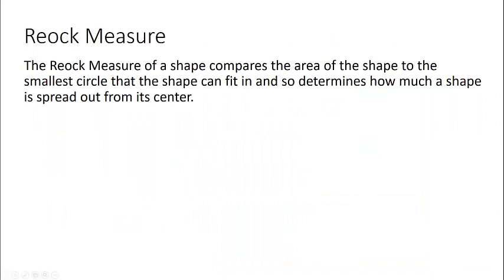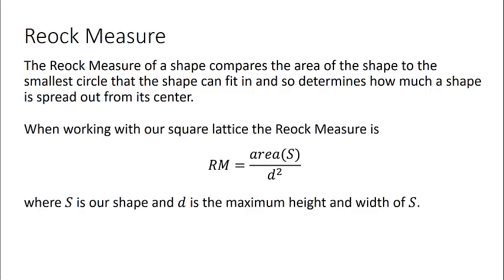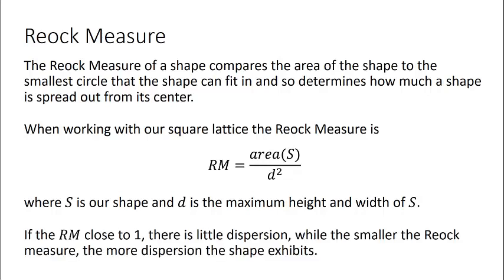Our second measure is called the REOCK measure. The REOCK measure of a shape compares the area of the shape to the smallest circle that the shape can fit in, and so it determines how much a shape is spread out from its center. When working with our square lattice, our REOCK measure will be the area of the shape S divided by D squared, where D is the maximum height or width of S — the farthest we can go up, down, left, or right and stay within our shape. Just like the Polsby-Popper measure, if the REOCK measure is close to 1 there is little dispersion, and the smaller the REOCK measure, the more dispersed the shape.